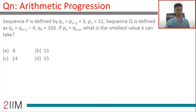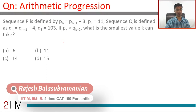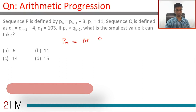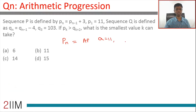Arithmetic progression question number 5. Sequence p is defined as pn equals pn minus 1 plus 3, or each term is the previous term plus 3. This sequence pn is an arithmetic progression. We know p1 is 11, so the first term is 11 and the common difference is 3.